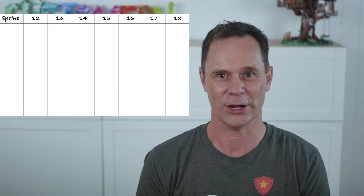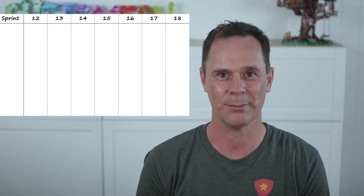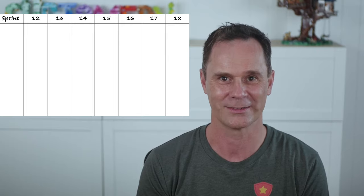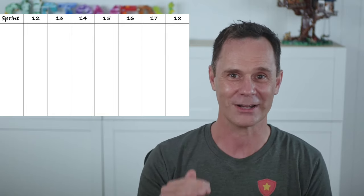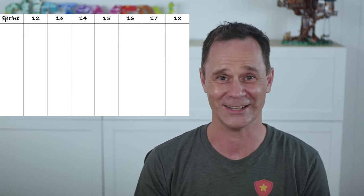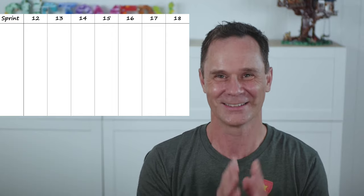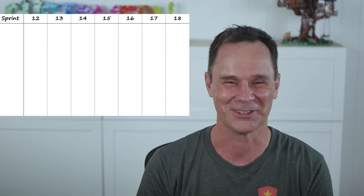The first step in our cross-team refinement board is to draw a timeline of our upcoming sprints. You could draw them vertically, progressing down, but this isn't TikTok, so my timeline is horizontal.